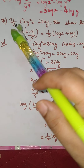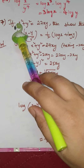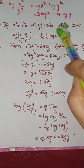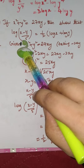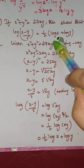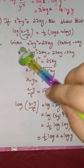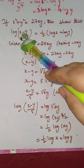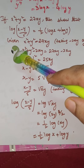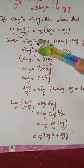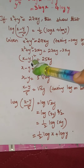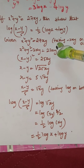Seventh problem: if x² + y² = 27xy, show that log((x−y)/5) = ½(log x + log y). Given x² + y² = 27xy, we need to prove this identity.